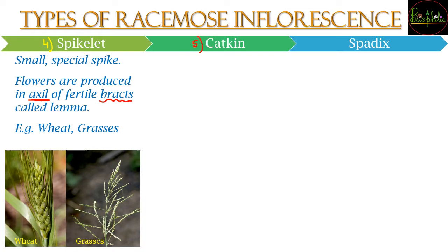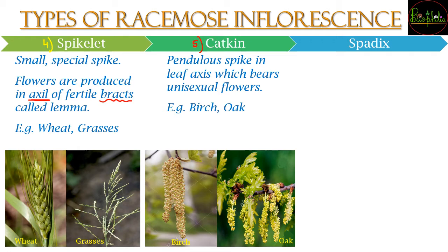The fifth type of racimose inflorescence is the catkin. In catkin, the pedicellate spike in the leaf axil has unisexual flowers. The first three types of racimose inflorescence had bisexual flowers, whereas catkin has unisexual flowers. This inflorescence is found in birch and oak. You can compare these to the spikelet and the other three types studied earlier.